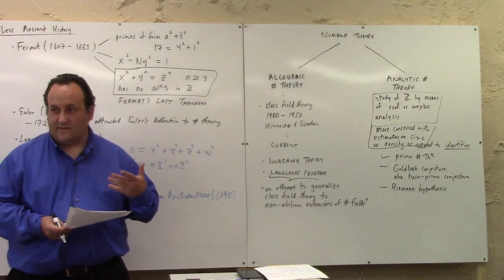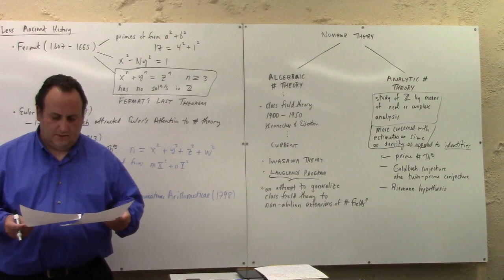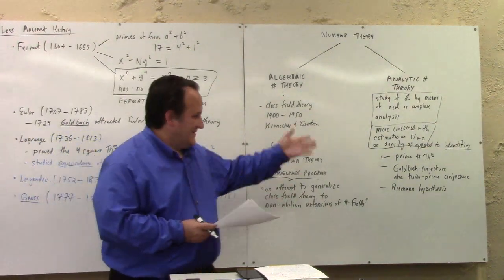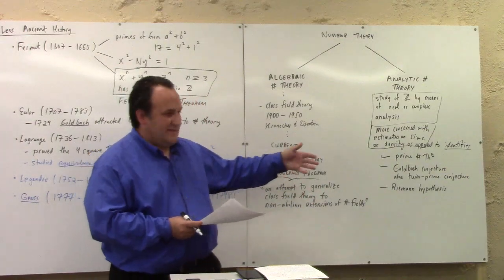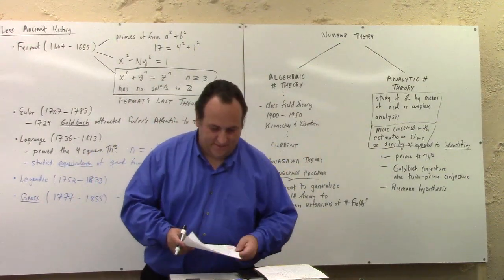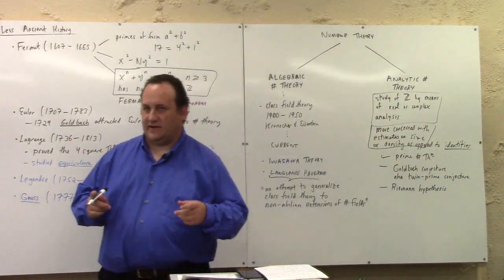So analytic number theory is - well, here's a statement. It's the study of the integers by means of real or complex analysis. And another characterization of analytic number theory is that it's more concerned with estimates on size or density, as opposed to identities. In contrast, algebraic number theory is all about finding particular algebraic structures which make lucid identities, makes identities natural from the algebraic structure.